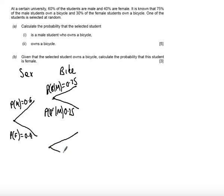Doing exactly the same for the females. You have probability they have a bike given that they're female, and this is 0.3, and then probability that they don't have a bike given that they're female must be the remaining probability of 0.7.